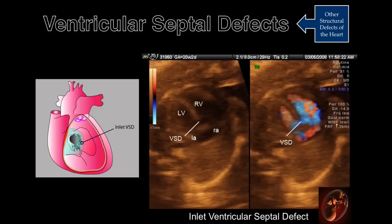This is an example of an inlet ventricular septal defect. These defects are associated with an increased risk for trisomy 21. The ultrasound display consists of identical images, one without and one with color Doppler. During the second trimester, an inlet VSD may not demonstrate shunting of blood across the septum because pressures between the ventricles are similar. Therefore, the color Doppler only demonstrates the blood pool or filling defect, as illustrated in this example.